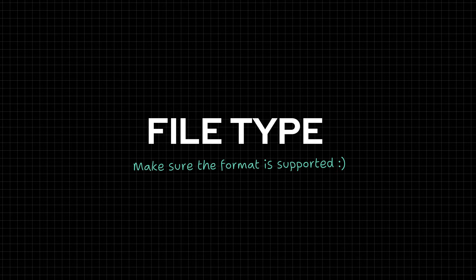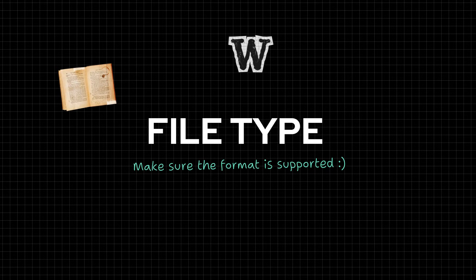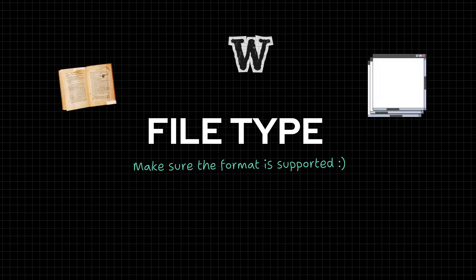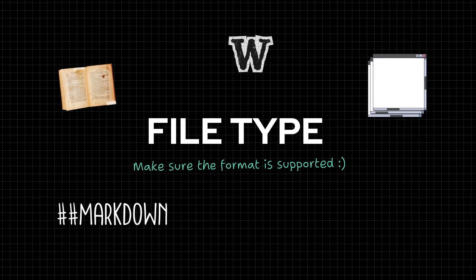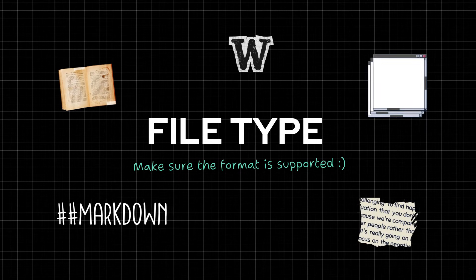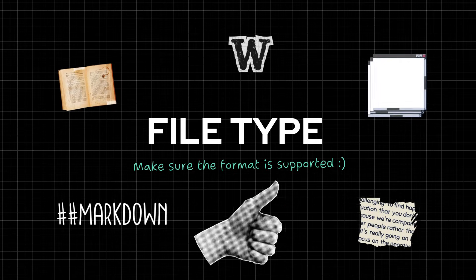When you're preparing data for a RAG pipeline, every detail in document formatting and structure matters. Let's start with the basics: the file type you're using. Make sure your files are in supported formats. This includes commonly used file types like PDFs, Word documents, HTML files, markdown, and even plain text. The Botpress Studio supports all of these file formats.